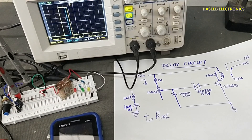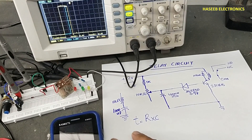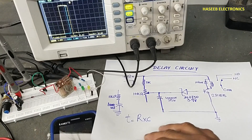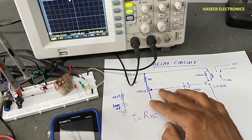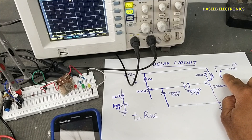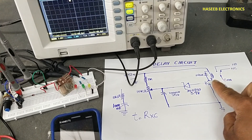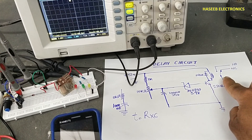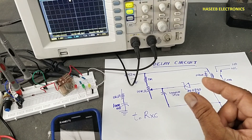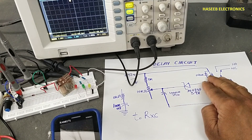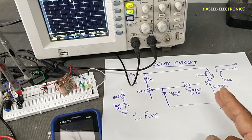Friends, welcome back to my channel. In video number 909 we discussed this delayed timer circuit. It provides delayed power-on to any circuit, or it can provide power-on for a short period of time, after which it will disconnect power. We can use it in two ways.